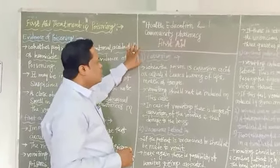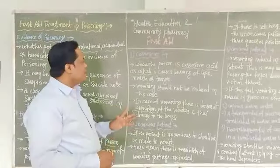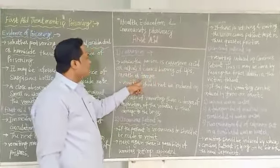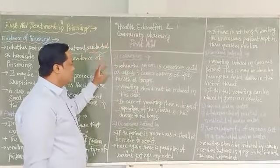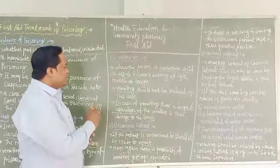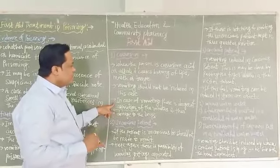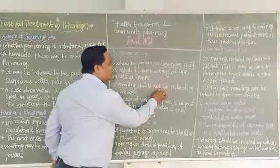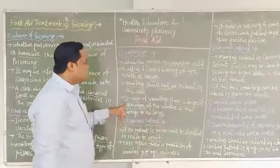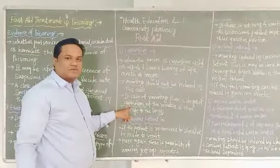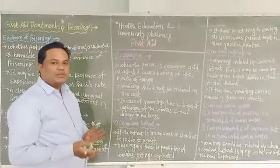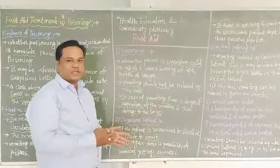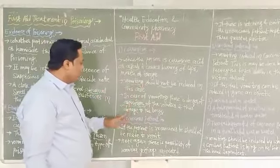The first type is corrosive. When the poison is corrosive — acid and alkali — it causes burning of lips, mouth, and tongue. If the poison is corrosive acid or alkali, then vomiting should not be induced. Vomiting should not be induced in this case because there is a danger of aspiration, meaning impaired supply of oxygen to the body, and damage to the lungs can occur. Therefore vomiting should not be induced.